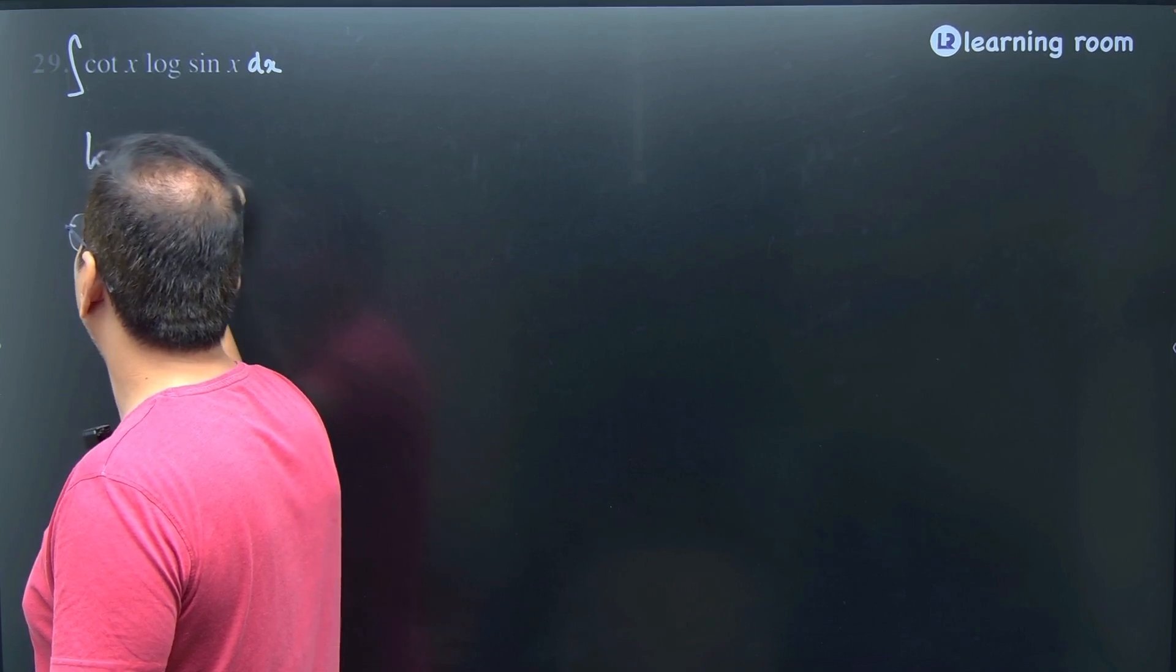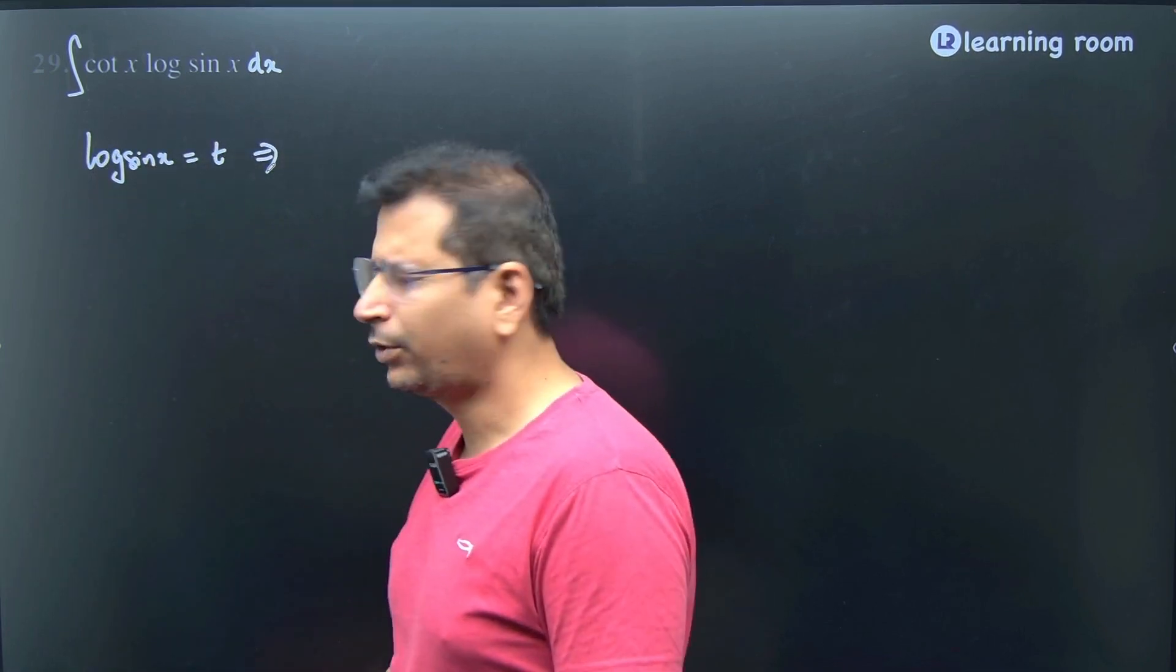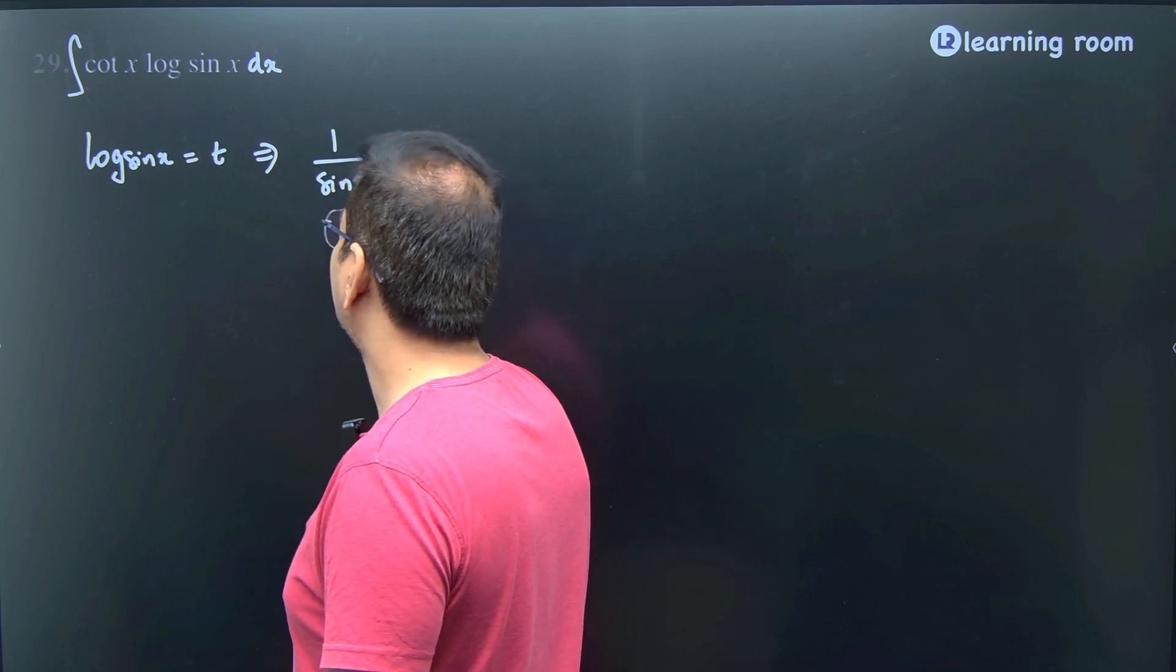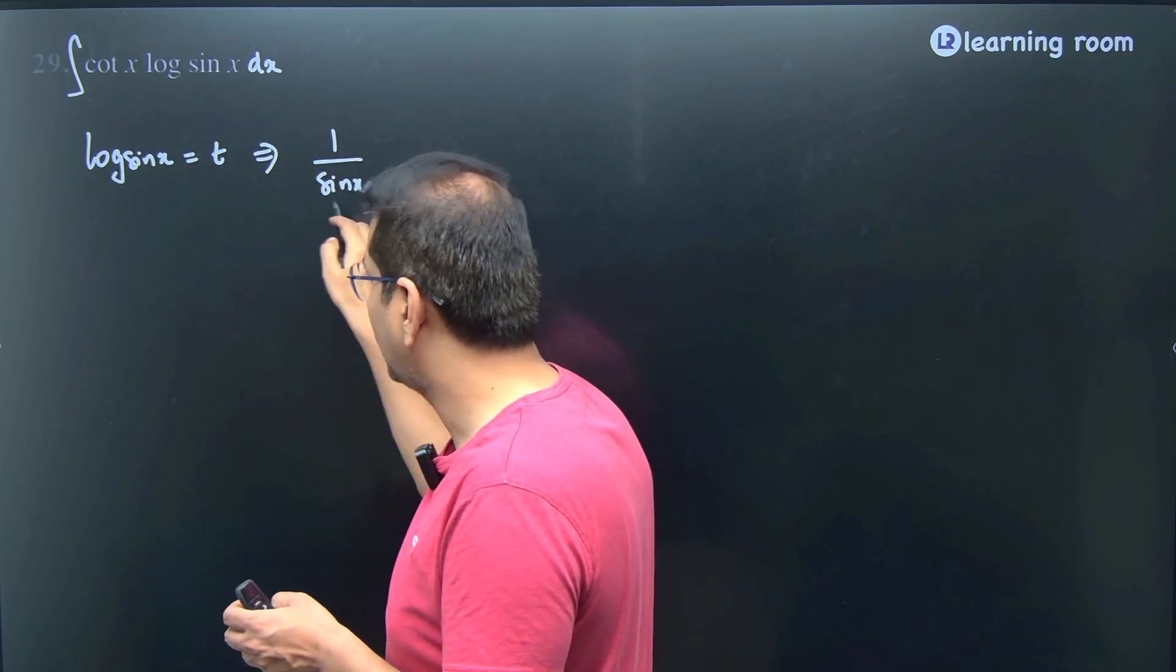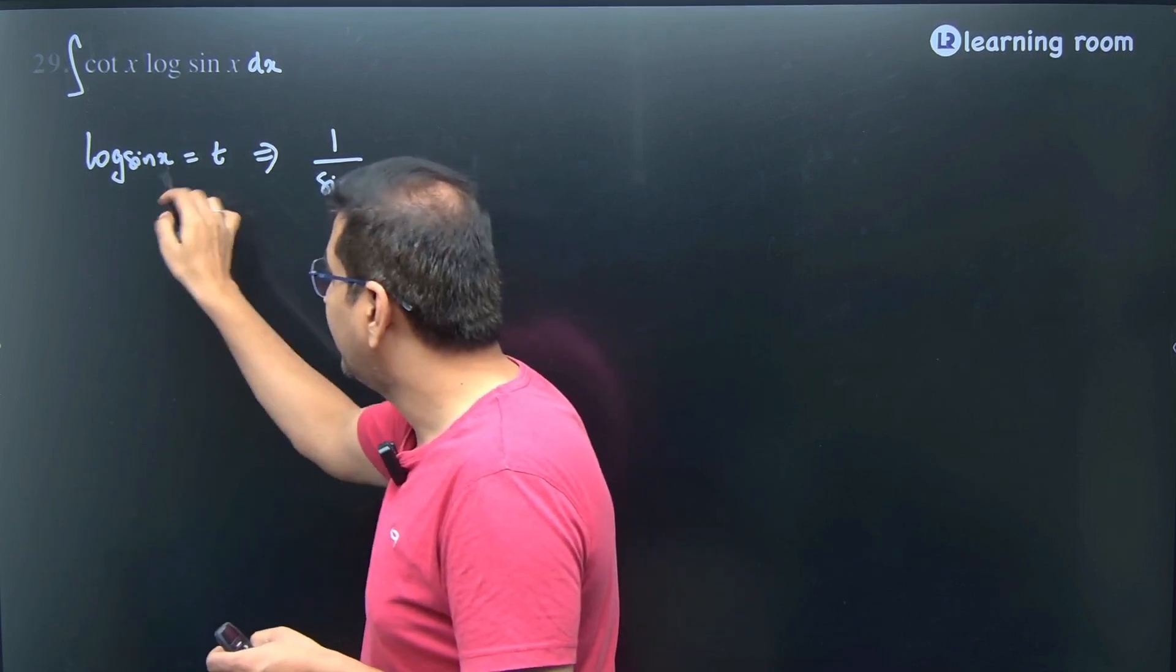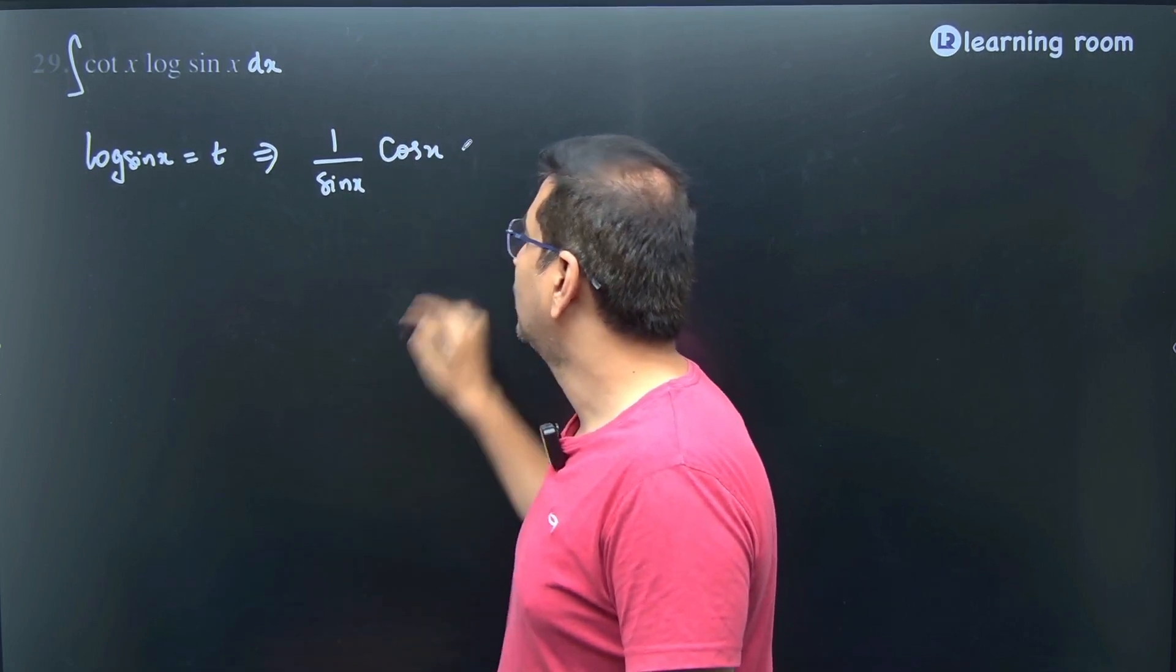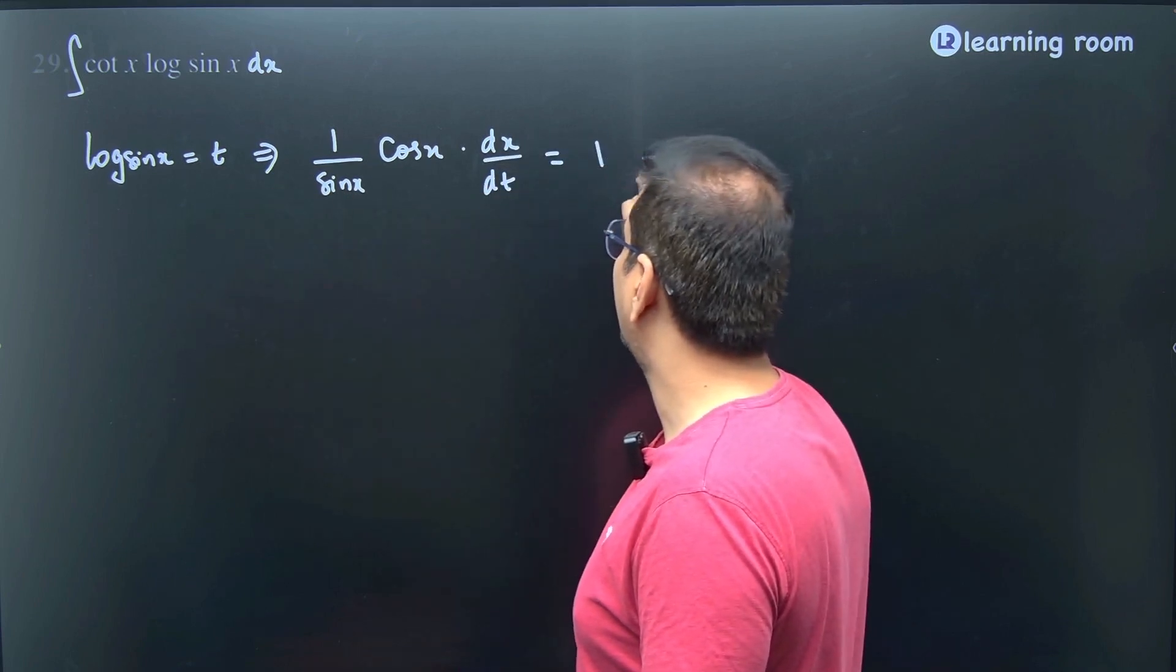If log of sin x is equal to t, then the derivative of log of sin x is 1 by sin x into the derivative of sin x. I am applying chain rule. Derivative of log is 1 by something, so I have that something as sin x into derivative of sin x is cos x into dx divided by dt equals 1.